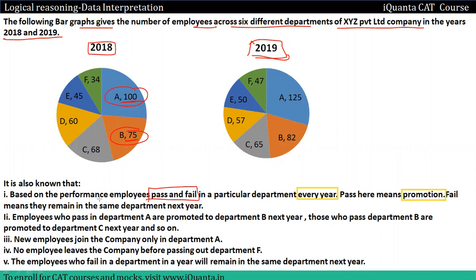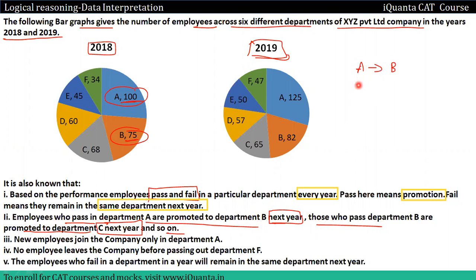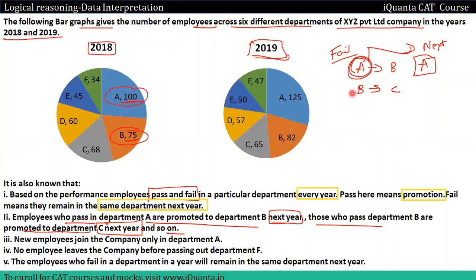And fail here means they remain in the same department the next year. Every year we have pass and fail. Employees who pass in department A are promoted to department B next year. Those who pass department B are promoted to department C next year, and so on. Those who fail will stay in the same department. New employees join the company only in department A.